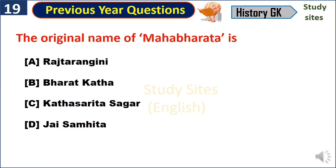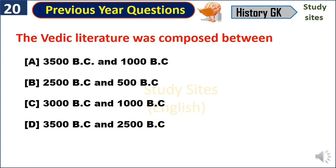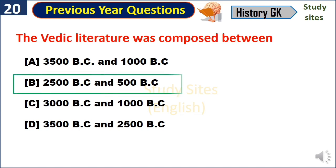The original name of the Mahabharata is Jaya Samhita. The Vedic literature was composed between 2500 BC and 500 BC.